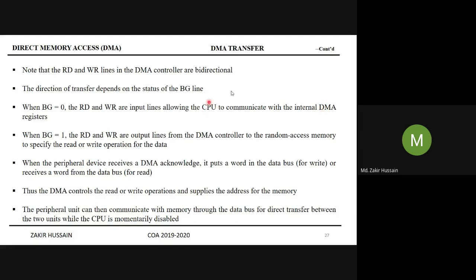When BG is 0 and there is no IO request, the CPU may want to check the DMA's internal registers. This could be because the DMA has signaled through an interrupt that there are no more words to transfer, and the CPU wants to read the remaining data in the DMA register — that's why the CPU communicates with the DMA when BG is 0.